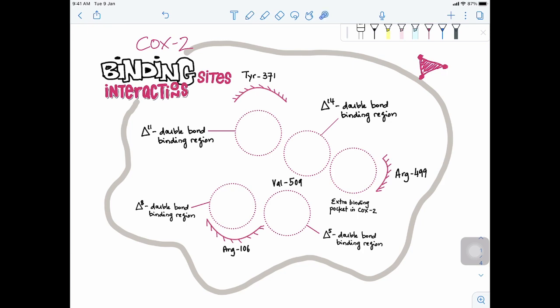There are a number of binding regions in the COX-2. This has been studied and now they can identify the binding site. They have identified that on the binding site there's the double bond region here on the 11th position, on the 8th position, on the 14th. I think this corresponds to the arachidonic acid structure and also at the 5th position as well. There's also this extra binding pocket in the COX-2 enzyme, and this extra binding pocket is hydrophilic. And also this amino acid arginine-499, tyrosine-371, and arginine-106 are important in interacting with a COX-2 inhibitor.